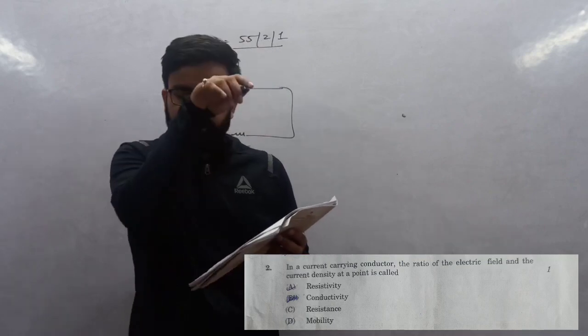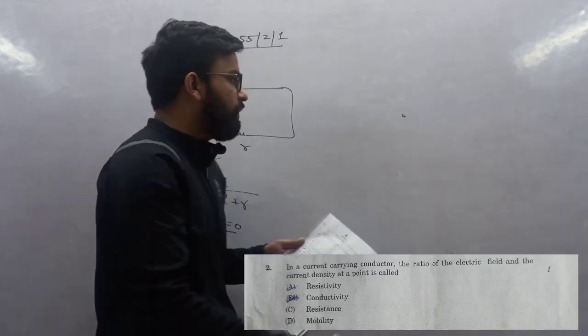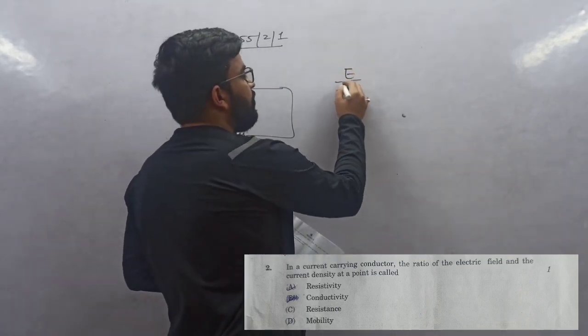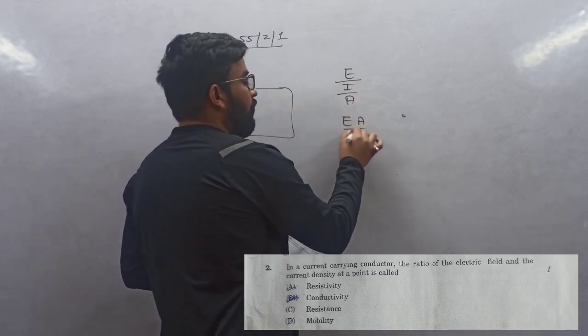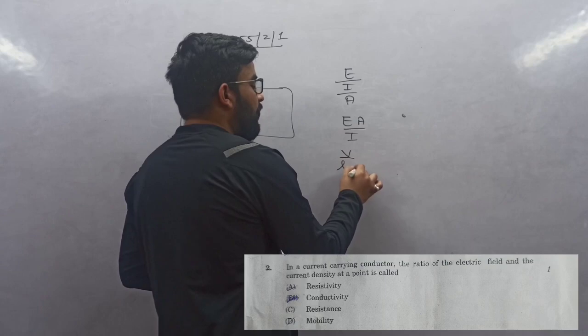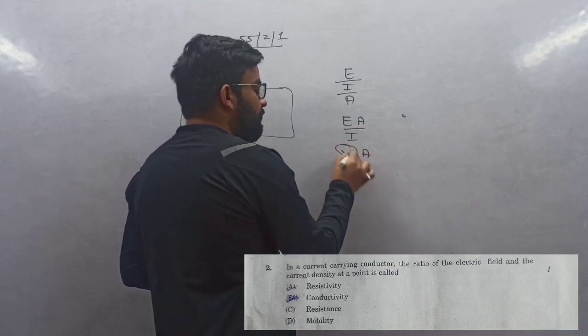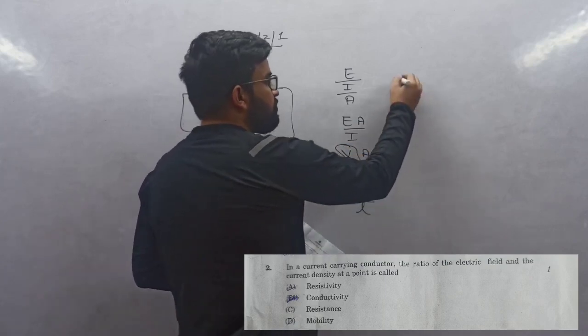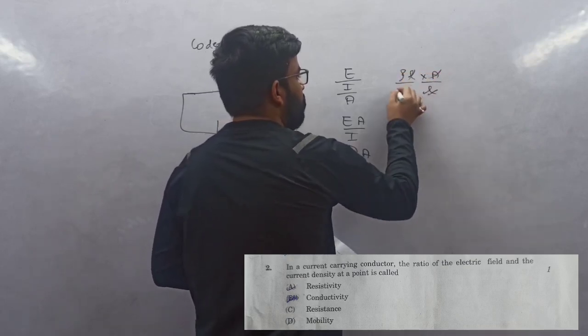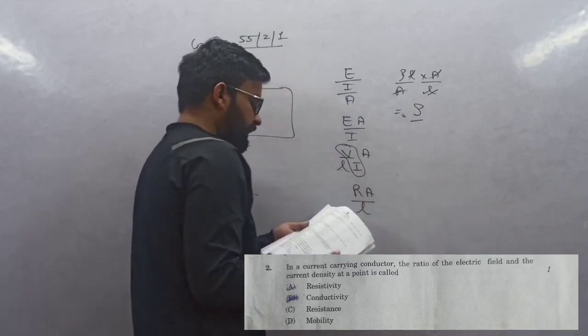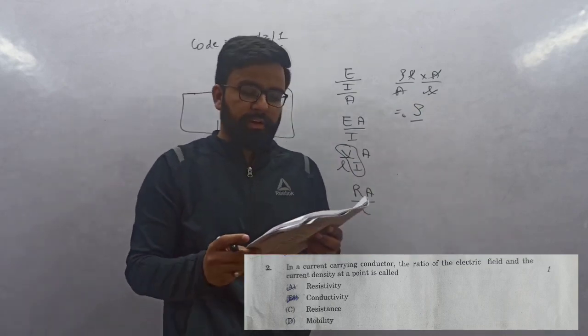Question 2: In a current carrying conductor, the ratio of electric field to current density at a point equals electric field upon current density. Current density is I/A. So E/A upon I. E is V/L, so V/I. What is V/I? Resistance, R·A/L. Resistance is ρL/A times A/L. They cancel and answer is resistivity.